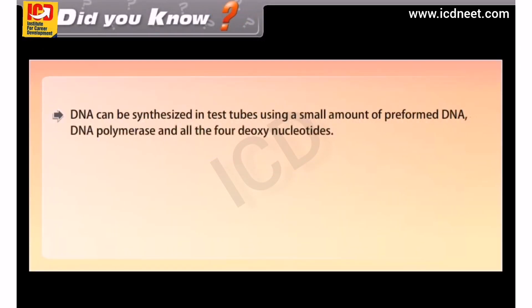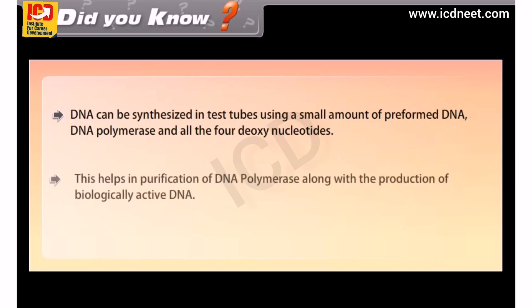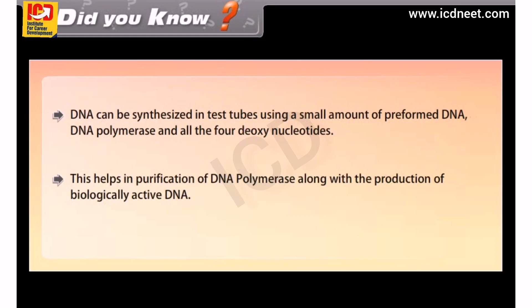Did you know, DNA can be synthesized in test tubes using a small amount of pre-formed DNA, DNA polymerase, and all four deoxynucleotides? This helps in the purification of DNA polymerase along with the production of biologically active DNA.